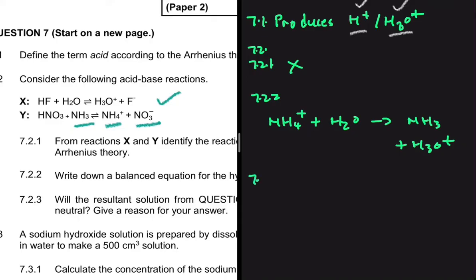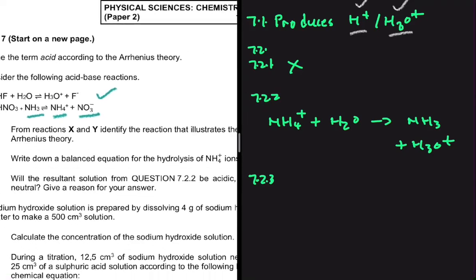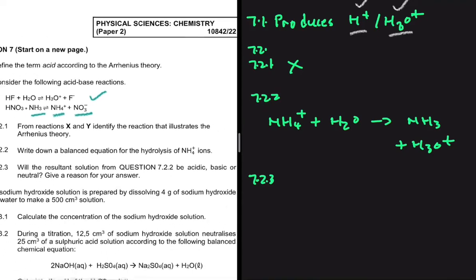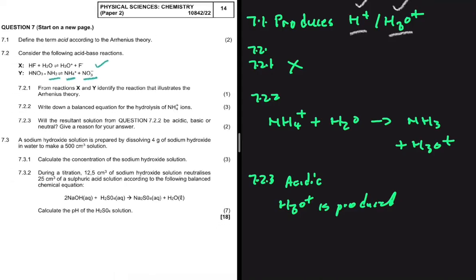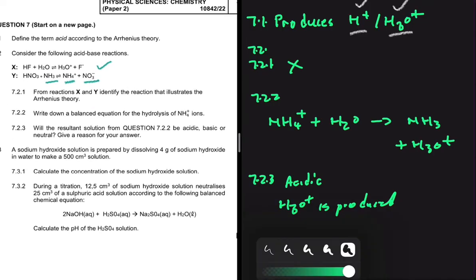For 7.2.3, will the resulting solution from 7.2.2 be acidic, basic, or neutral? It is going to be acidic, because H3O+ is produced. If OH- were produced, it would be basic, but in this case we have H3O+.